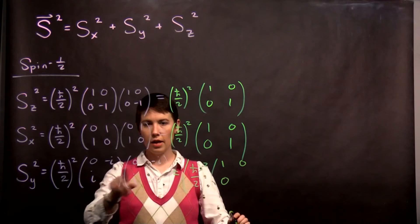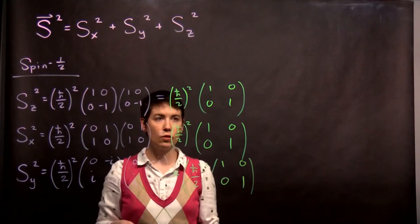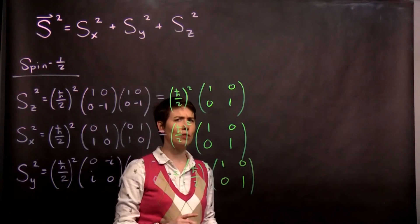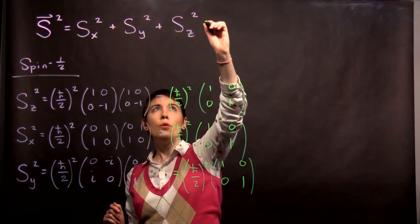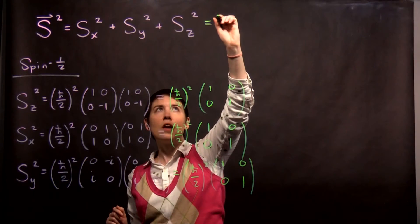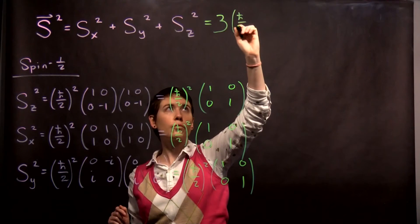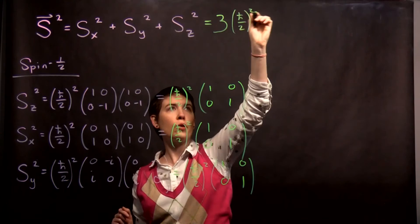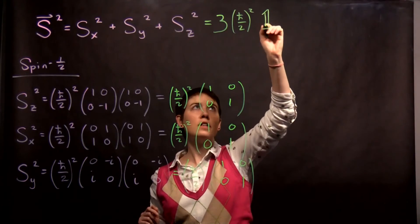i times negative i is, again, positive one. Now, as you can see, we've actually gotten the same answer for each of these squared. So, that's also the same thing as saying three times h-bar over two squared. And now, I can write this as my identity matrix.